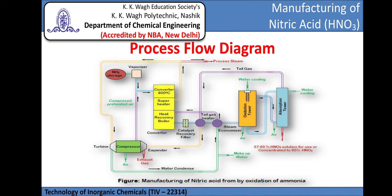The nitrogen monoxide produced is fed to an oxidation tower, where it is oxidized to nitrogen dioxide with the help of air. The nitrogen dioxide is then cooled and absorbed in an absorption tower, where a 57 to 60 percent HNO₃ solution is prepared. The tail gases are recycled to an expander or catalytic converter.